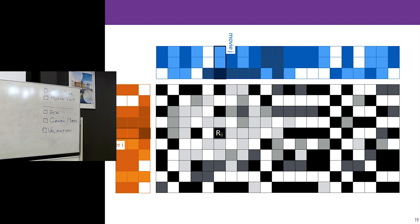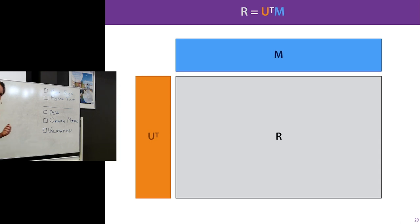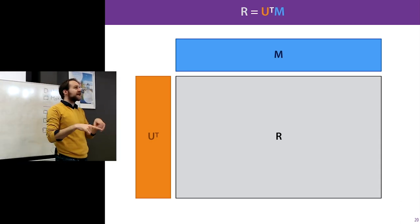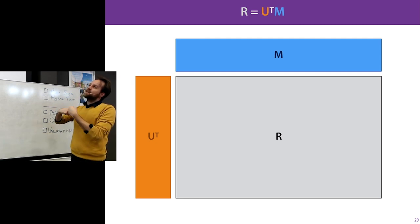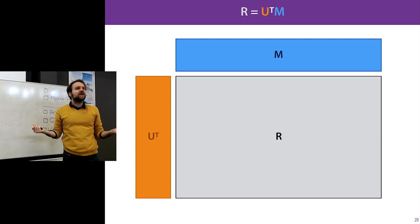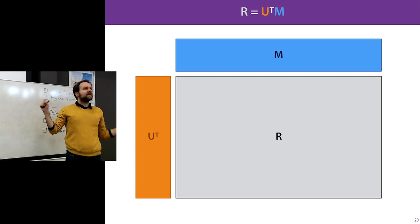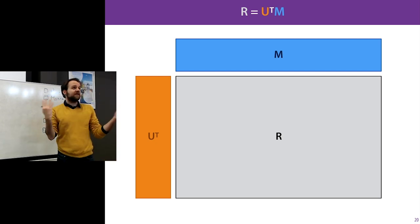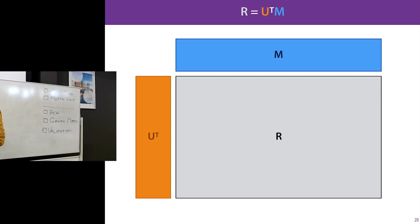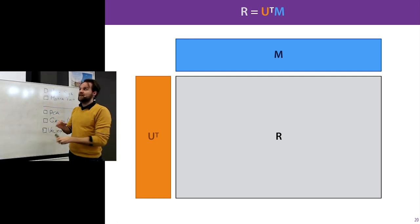This is why we call it matrix factorization: looking at it from the other direction, we have this rating matrix and we're trying to decompose it as the product of two low-rank matrices — one representing users and one representing movies. These are factors of a multiplication, and we're factorizing the data.